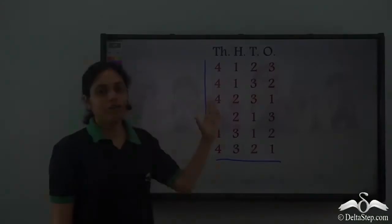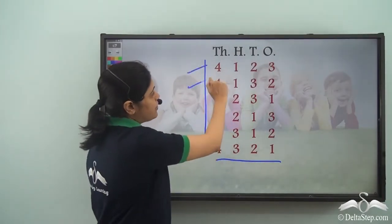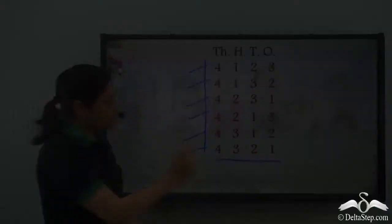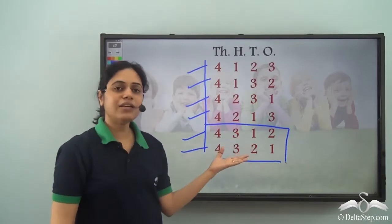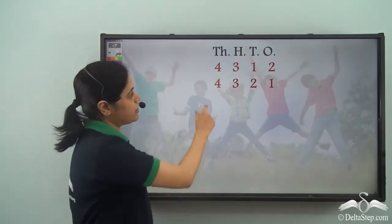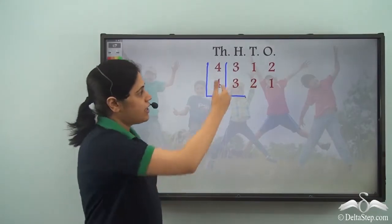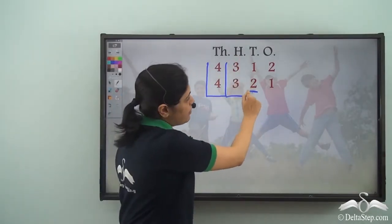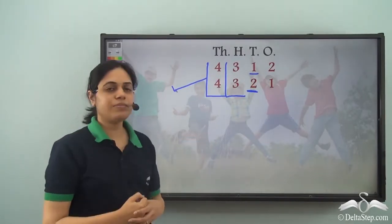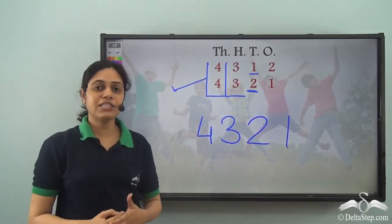Which number is the largest? Since the thousands digits are all the same, we compare the hundreds digits. The pairs with 1, 2, and 3 in the hundreds place are identified. Those with 3 in the hundreds digit are greater. In those two numbers, the tens digit of 4321 is 2, whereas 4312 has 1. So 4321 is the biggest four-digit number.